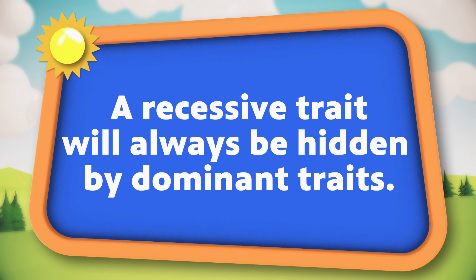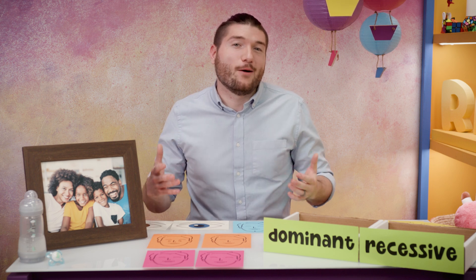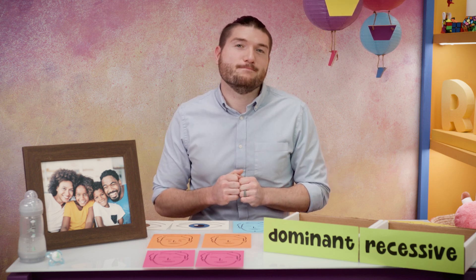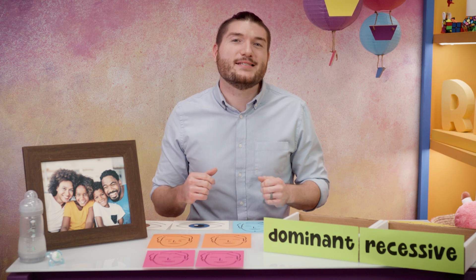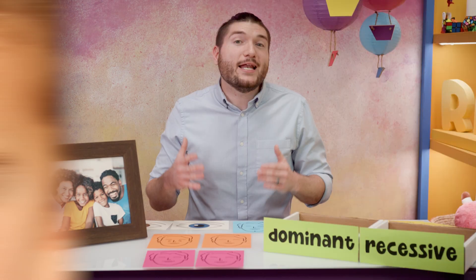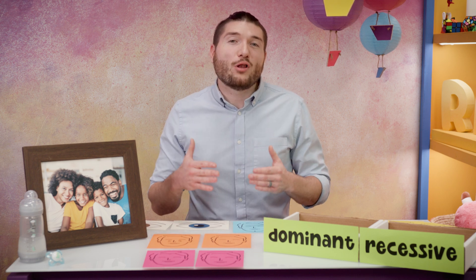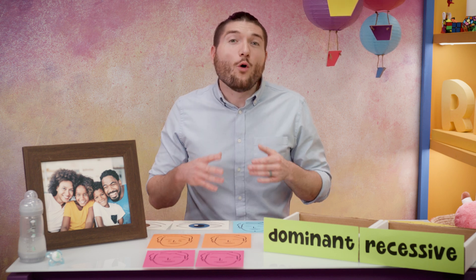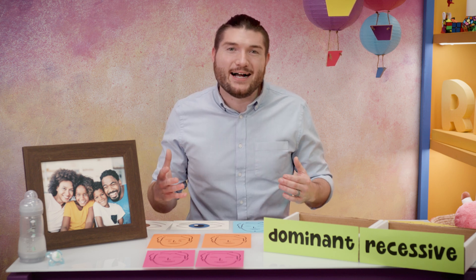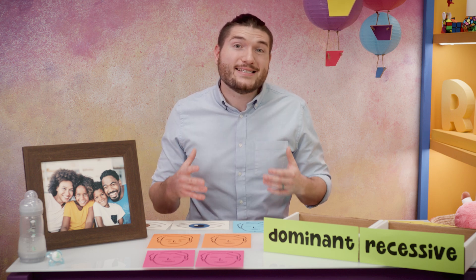Both parents must have the recessive trait for it to show up, but even then it's not guaranteed to show up in the offspring or babies. Dominant traits include brown or black hair and brown eyes. Do you or anyone in your family have these traits?